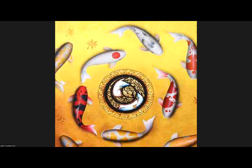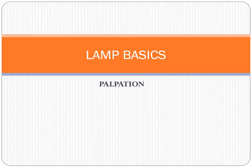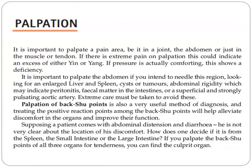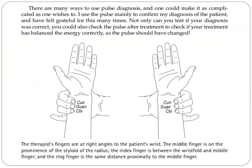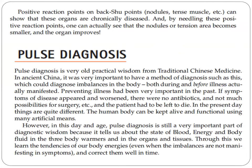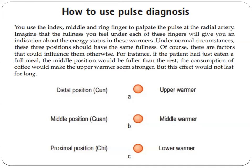Thank you for your attention. Now let's talk about palpation. How to use pulse diagnosis: you use the index, middle, and ring finger to palpate the pulse of the radial artery. Imagine that the fullness you feel under each of these fingers will give you an indication about the energy status in these warmers. Under normal circumstances, these three positions should have the same fullness.